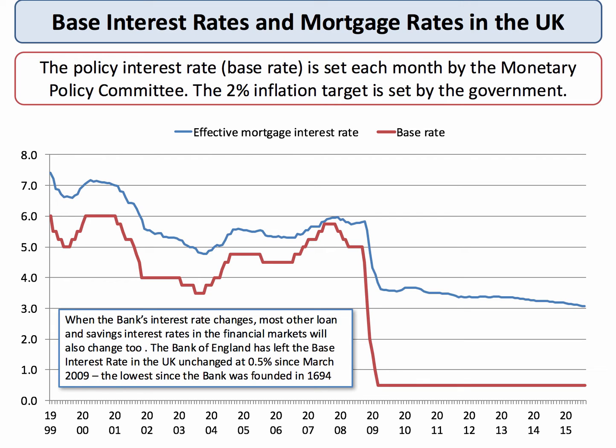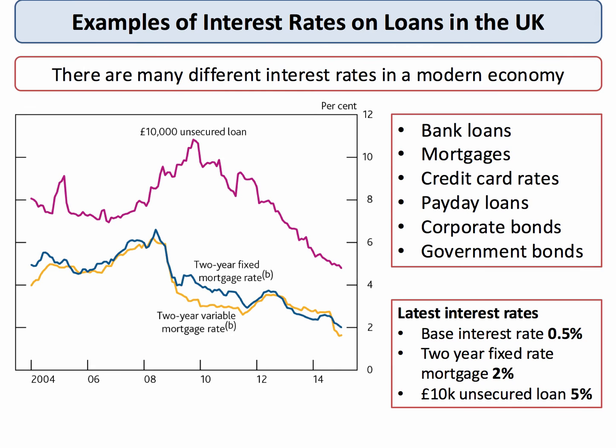Other interest rates of course are set by the markets. The red line in this chart shows the base rate set by the Bank of England, whereas the blue line is the average effective mortgage rate, which is set in financial markets. There are thousands of different interest rates in a modern economy, so although we tend to focus on the base rate of interest, it's important to also be aware of what's happening to savings rates for deposits and lending rates on loans.